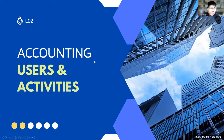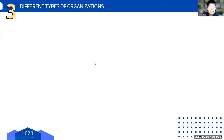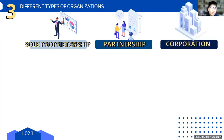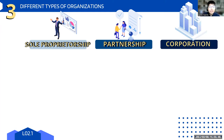Sole proprietorship is easy to form — for example, deciding to sell cheesecake and starting an IG shop. In contrast, corporations have strict articles of incorporation and need to be filed with relevant government bodies — very hassle to form. To compare and contrast the three types of organizations, we'll use: number of partners, ability to raise capital, liability to owners, life of the organization, regulation, and management.